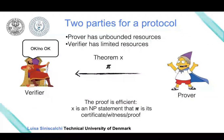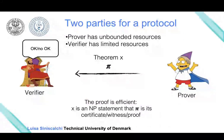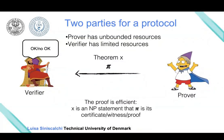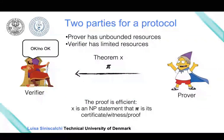This class of problems includes all the decision problems where the yes instances can be verified in polynomial time, meaning there exists a certificate or witness such that a polynomial time machine can take as input x—the theorem or instance of the problem—and the certificate or witness for this instance, and verify that the theorem holds.